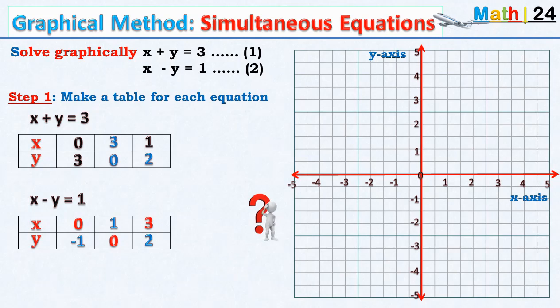We have chosen three points for each of the equations. You can actually choose just two points and sketch the lines, but it is very important to take three points. The third point serves as a check — in case the two points don't fall on a line, the third point will indicate a problem. If you plot three points and they are not aligned, it means there is a problem and you have to go back and check your work.